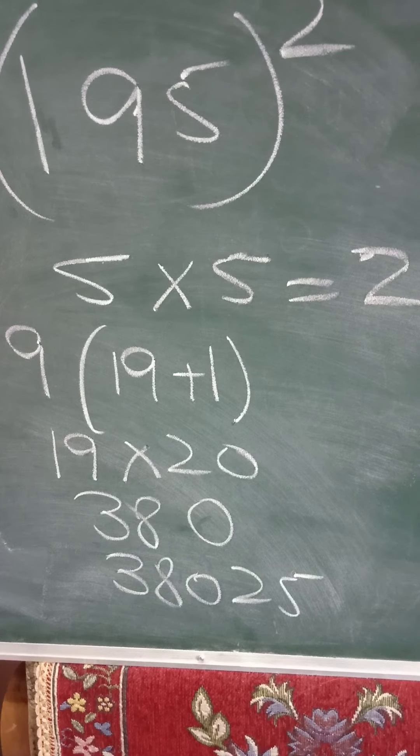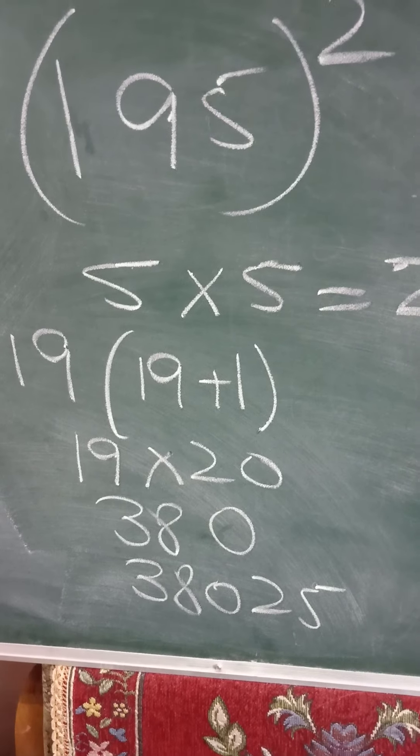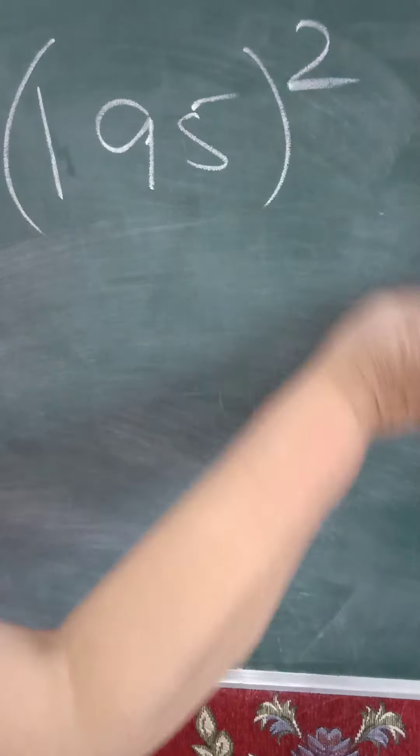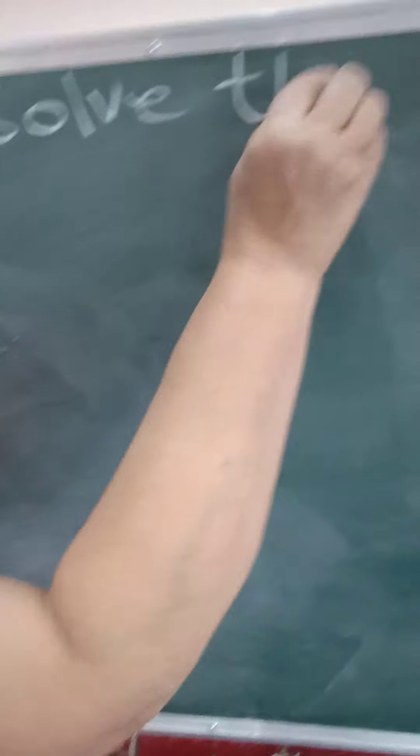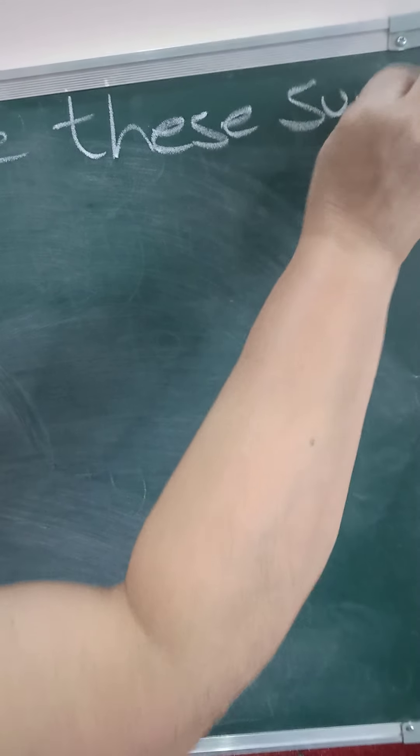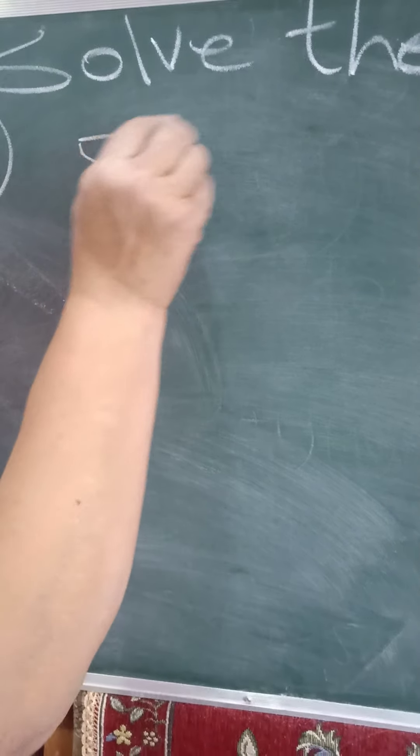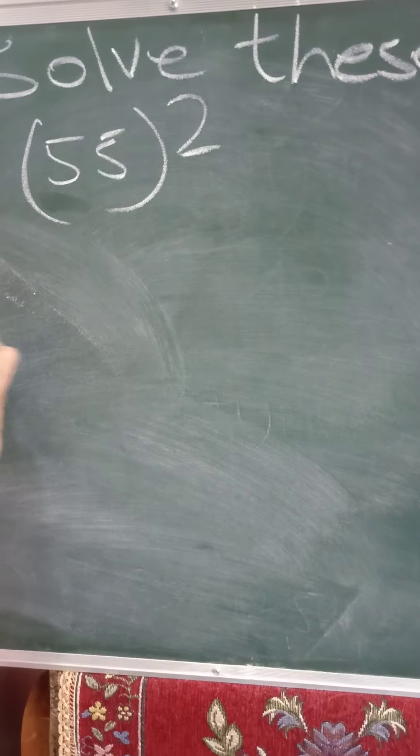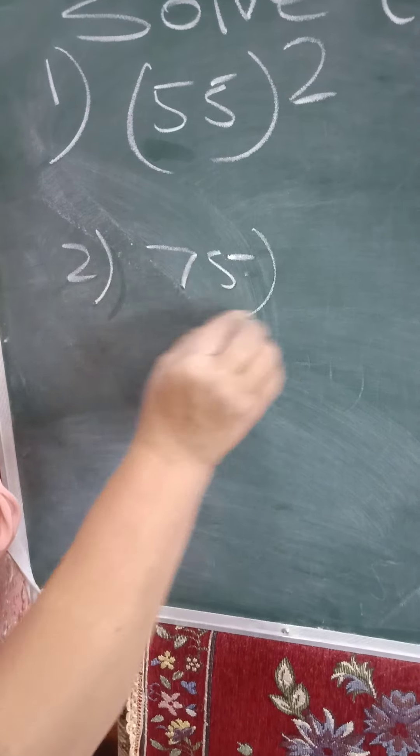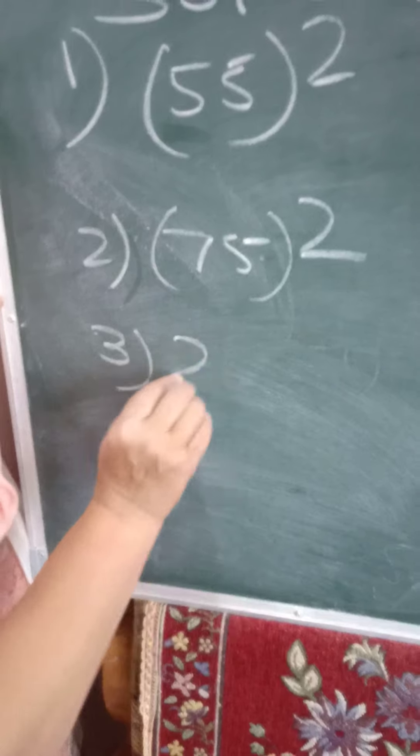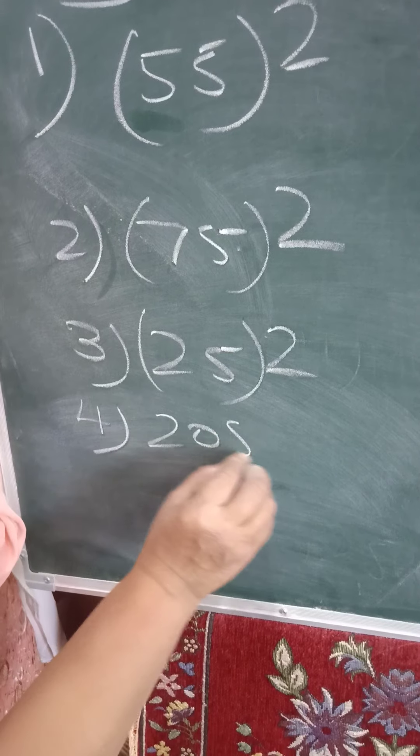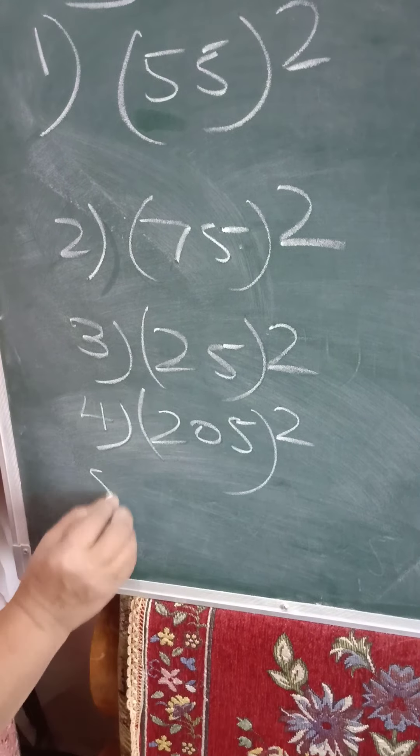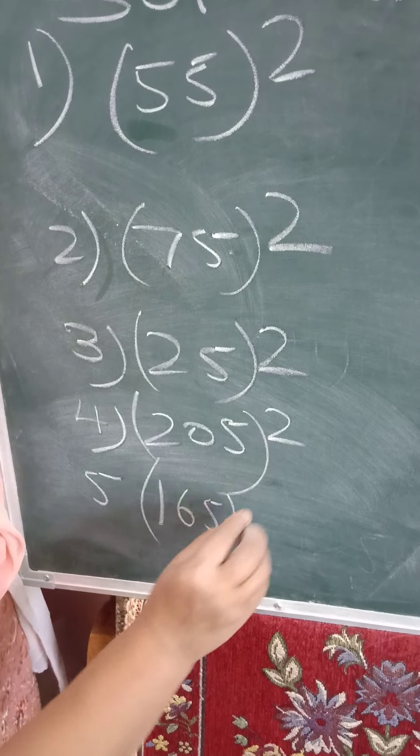Okay children. Very good. Now you must have understood. Now what I will do. I will write 5 sums here. Okay. And I will also write the answers. But just I will solve these sums. I will give you this exercise. Solve these sums. First sum is 55 square. Second is 75 square. Third is 25 square. Fourth is 205 square. And fifth is 165 square.